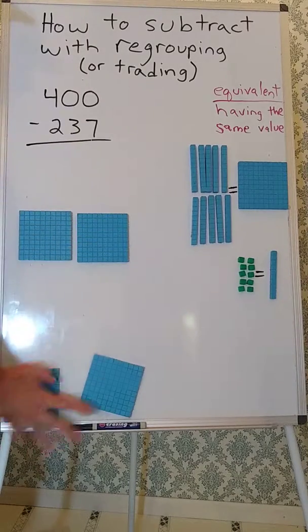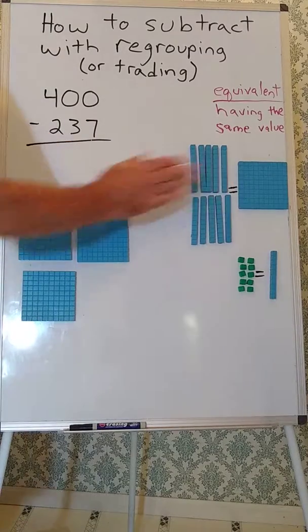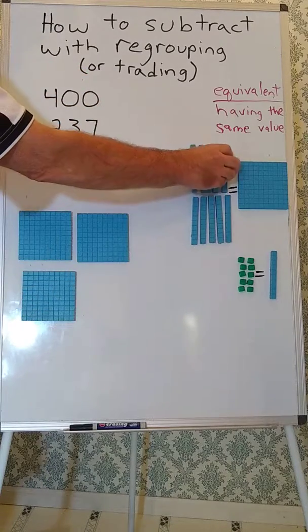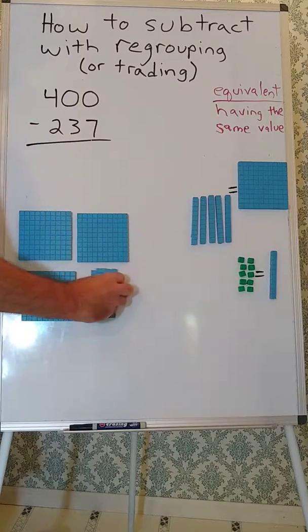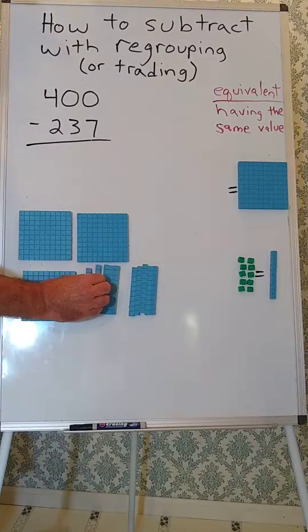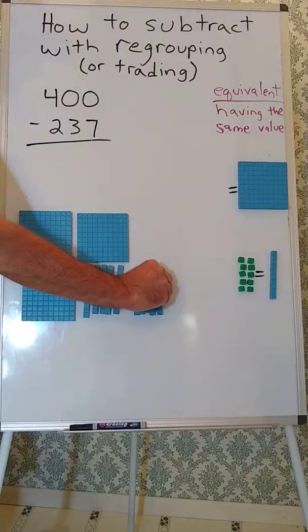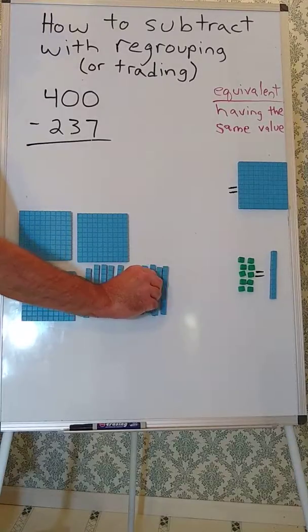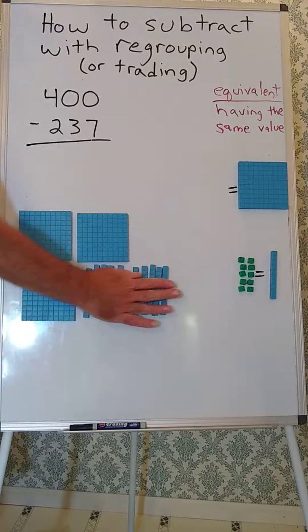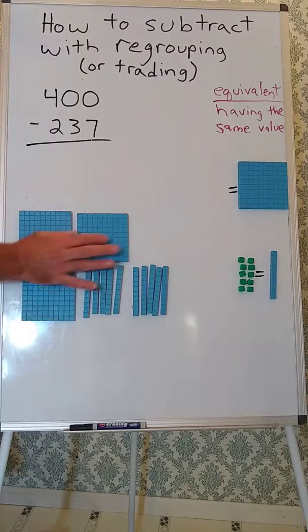We're going to trade this 100 for these 10 tens. They're equivalent, so I can replace this 100 with those 10 tens. We'll do it this way so you can see that there are 10 tens. Separate the groups a little bit, then you can easily see there are two groups of 5. So we see 5 tens, 5 tens, so we see 10 tens. We're still starting with 100, 200, 300, 400.